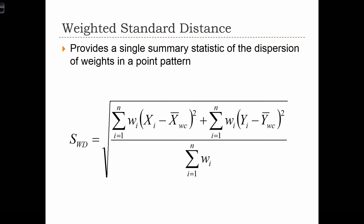If our data are weighted, we want to use a weighted standard distance statistic instead of the unweighted standard distance statistic. The only difference in the formula is that instead of using the regular unweighted mean center, we're going to use the weighted mean center in the differences. We're also going to multiply each difference by the weight of the point, and instead of dividing by n, we're going to divide by the sum of the weights.